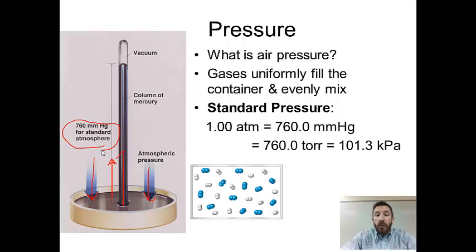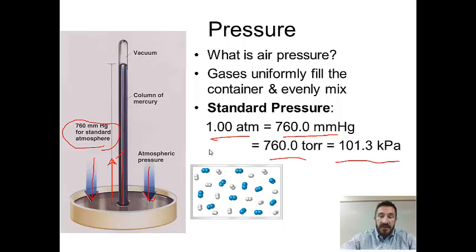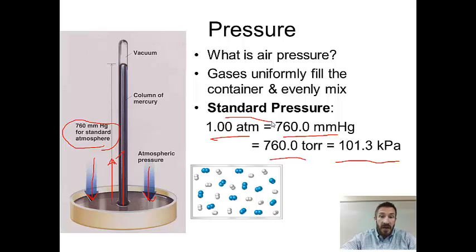We have four units of pressure we're going to be using, all listed here at standard conditions: one atmosphere, 760 millimeters of mercury, 760 torr, and 101.3 kPa. All four of these are considered standard pressure, and they're units we're going to use over and over in the course. Pressure is really the force of those particles hitting the sides of the container.